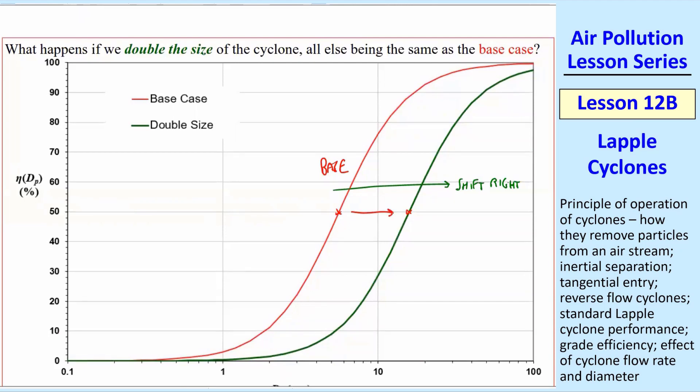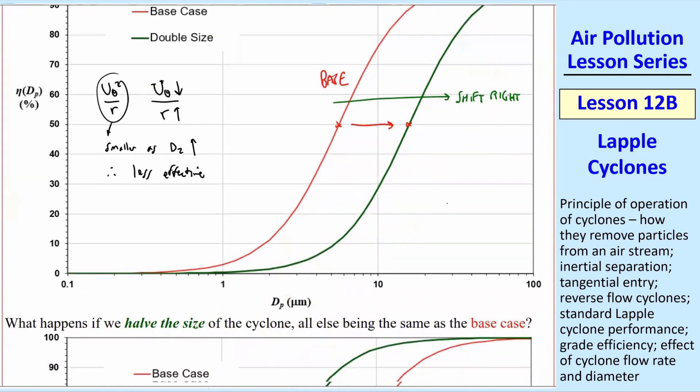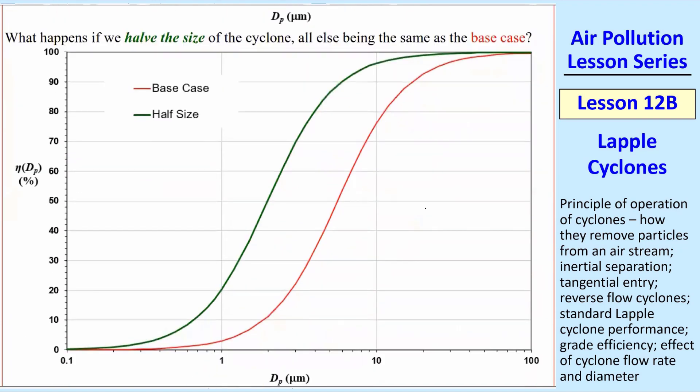Think in terms of the centripetal acceleration, u_theta squared over R. Well, if I have the same flow rate through twice the bigger geometry, u_theta is going to go down, and I have twice the bigger geometry, so R goes up. So we have some smaller numerator and some bigger denominator, so this guy gets smaller as D2 goes up. Therefore, it's less effective. So doubling D2 makes it worse. If I take D2 half of what it was and keep everything else the same, we get an improvement. So smaller D2 is better. And it's the exact opposite of this. I'm thinking of u_theta. If you make it smaller with the same flow rate, then u_theta has to go up, and R went down. So u_theta squared over R, this is up, and this is up. So this is up a lot.